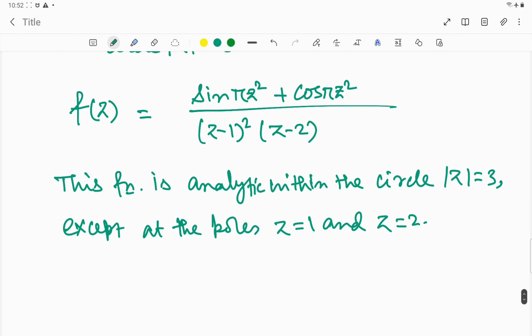The poles are z equal to 1 and z equal to 2. Now z equal to 1 is a pole of order 2, and z equal to 2 is a pole of order 1.